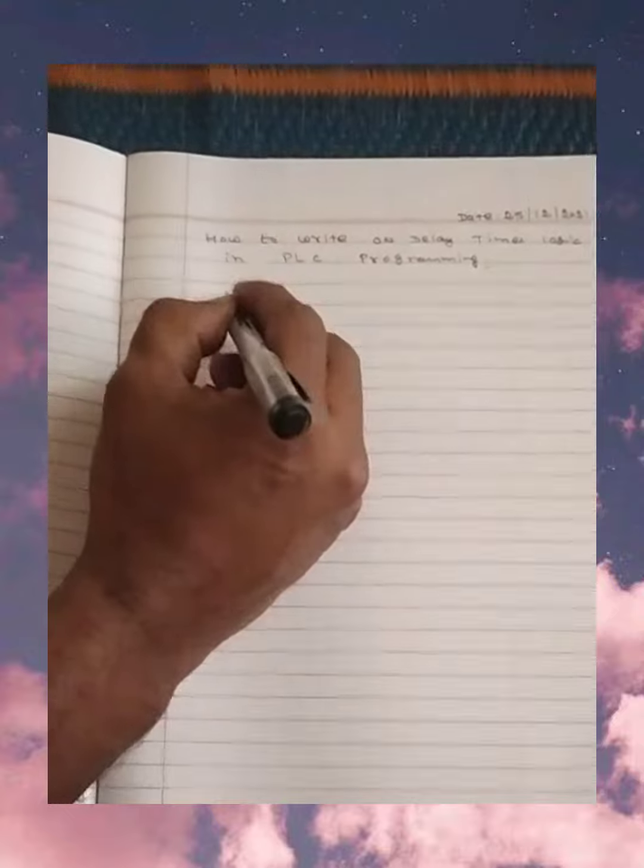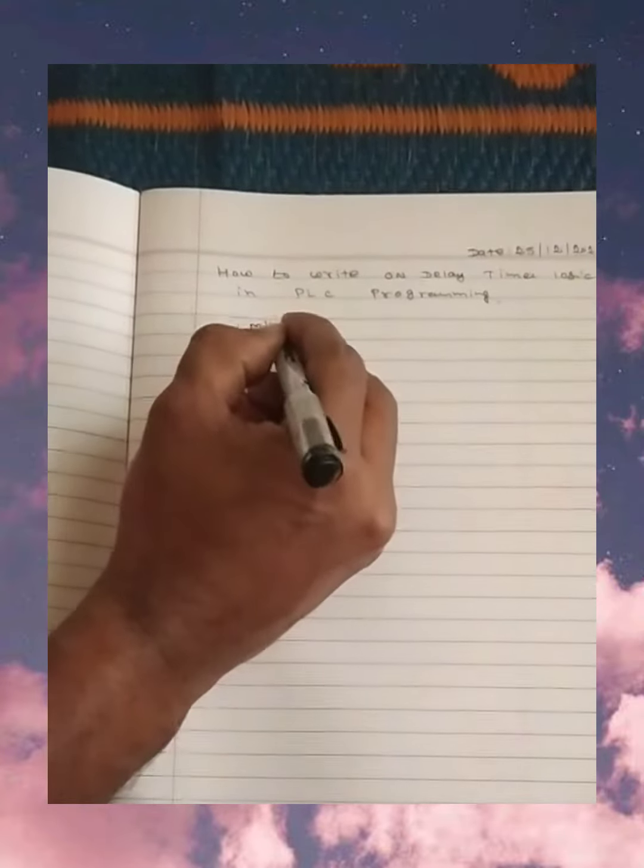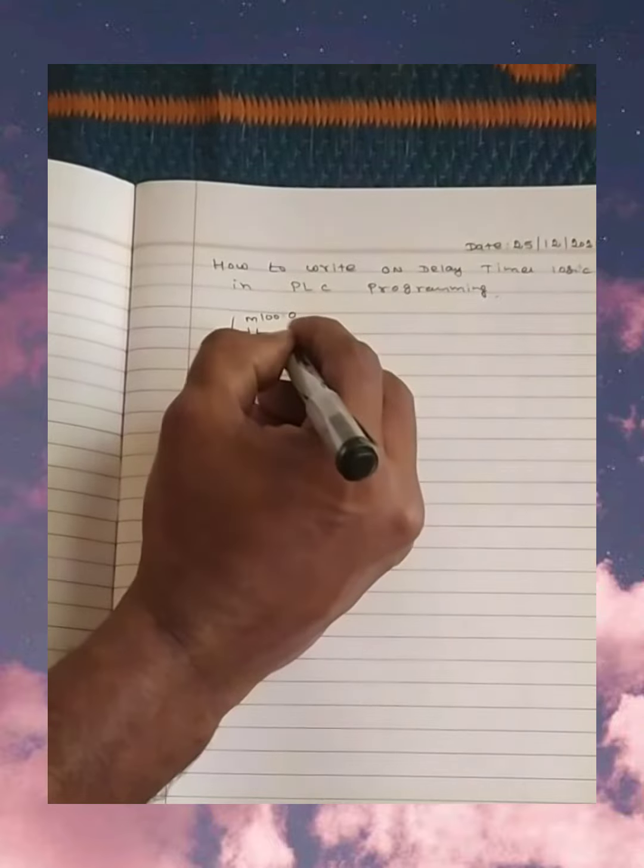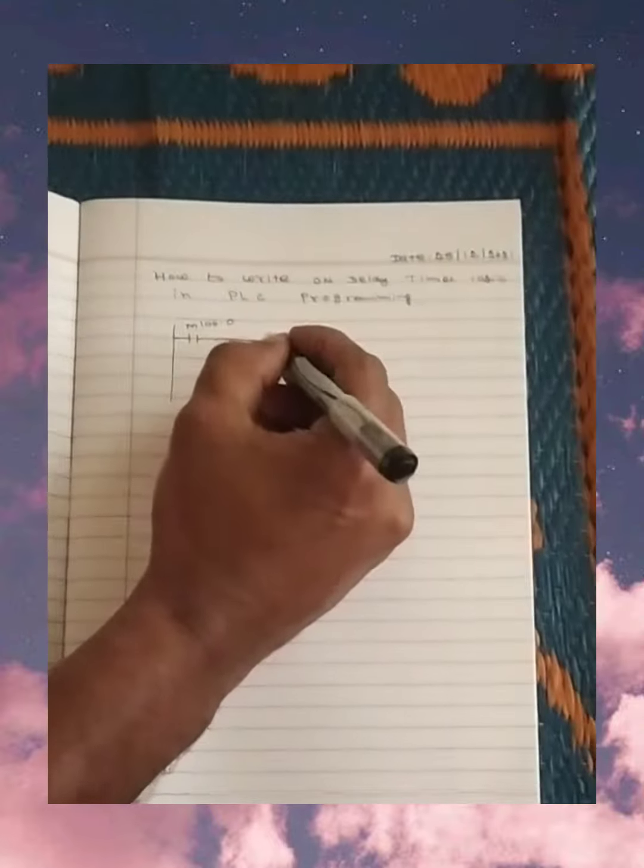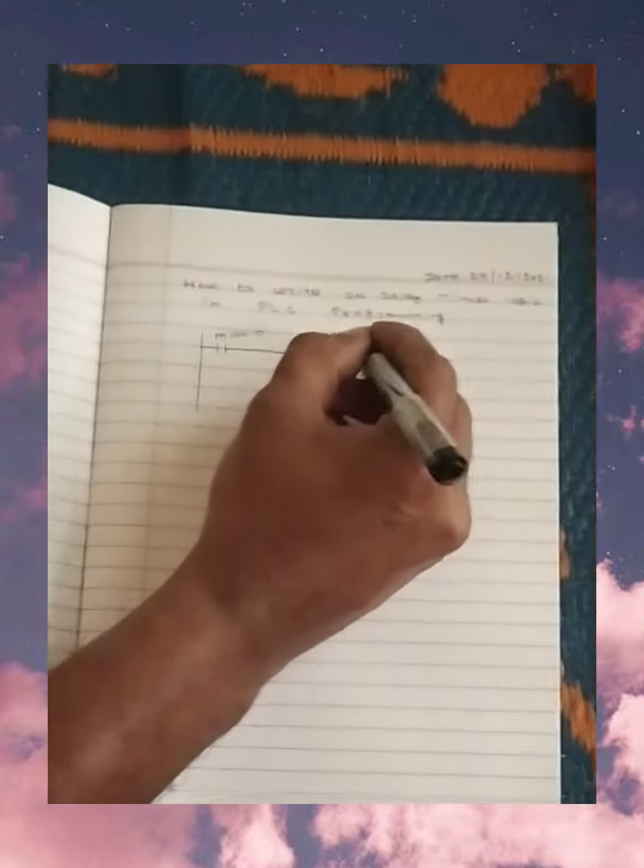So we will take one input, say M100.0. This is one input, it's a push button. And then I will turn on my output, say like M100.1.